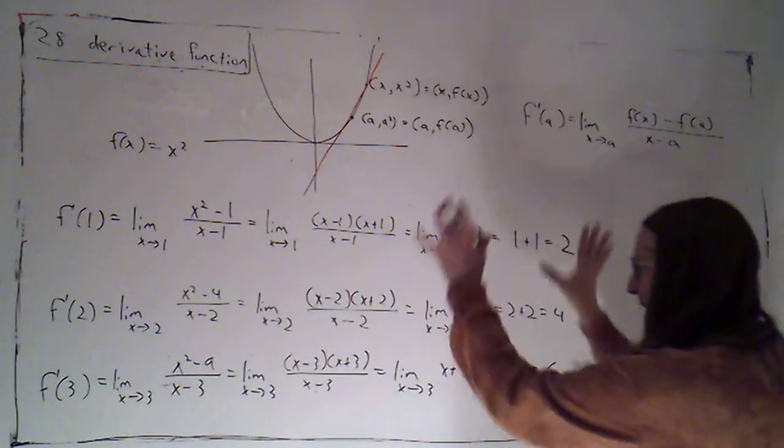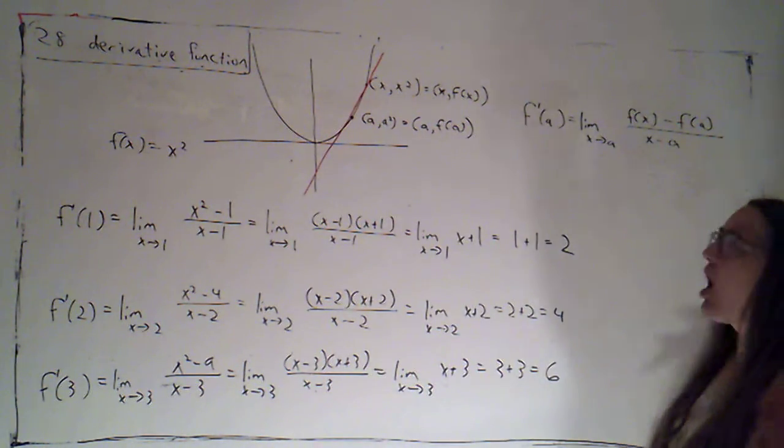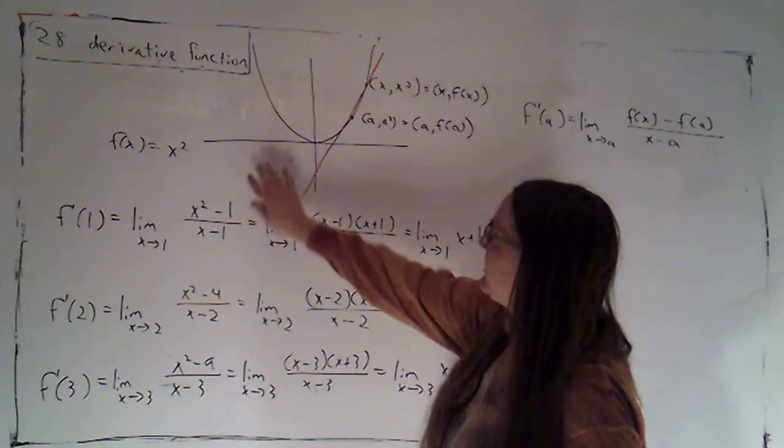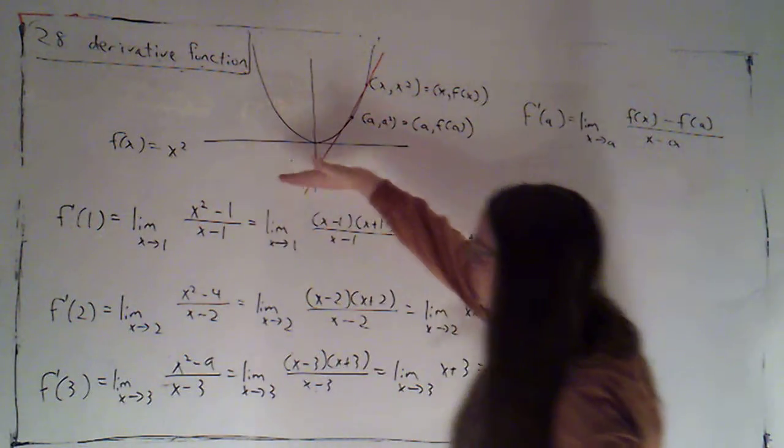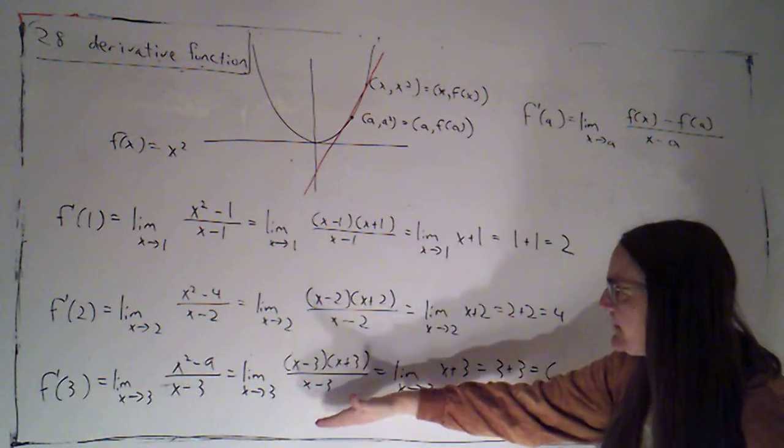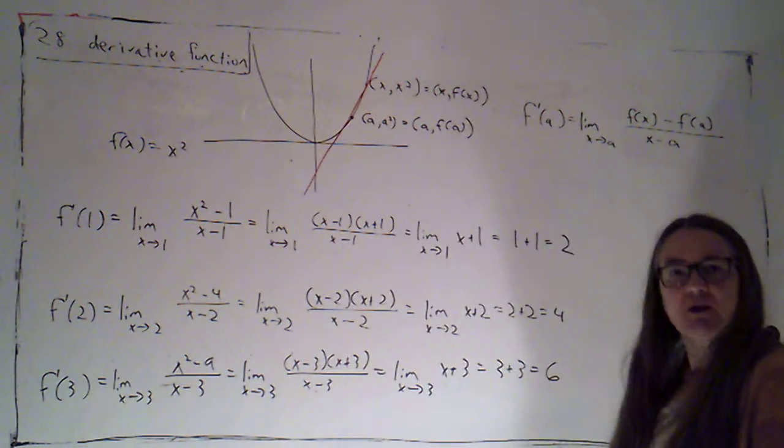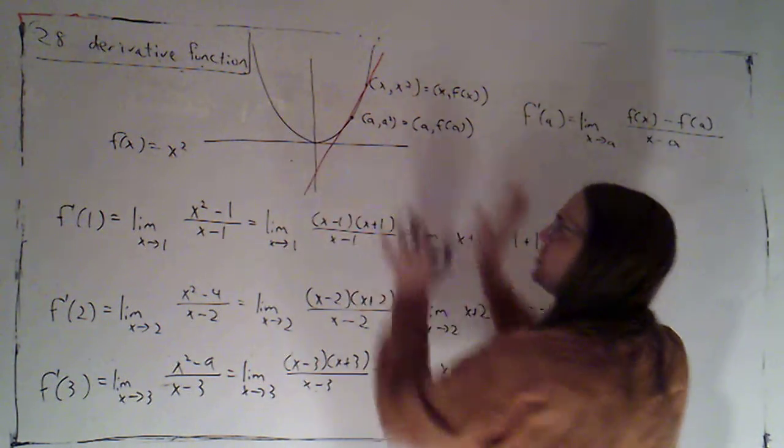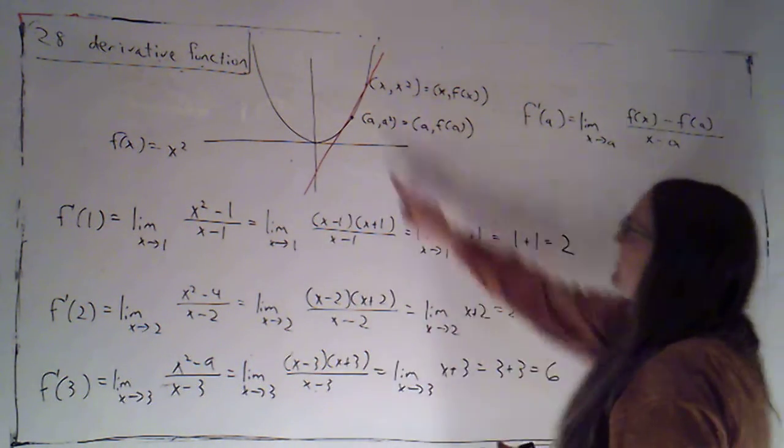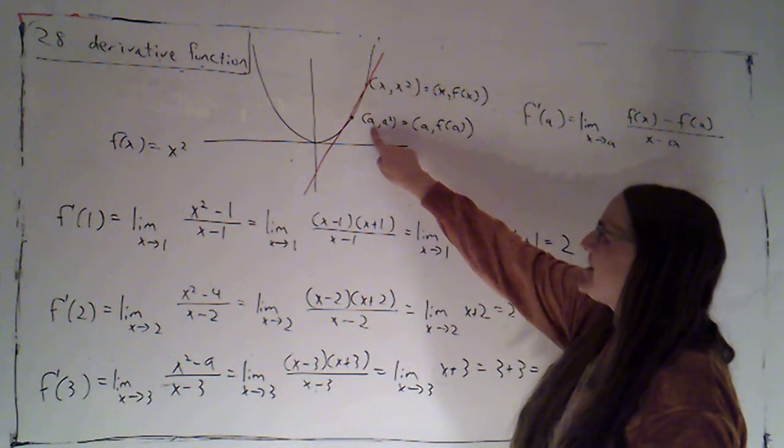But I want to look at the work I've got here on the board. I've given us an example of a function f of x equals x squared, and what I've done is I've worked out the limits that give me the derivative at three different points. So here I've just got a generic picture.